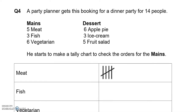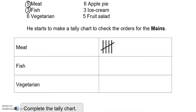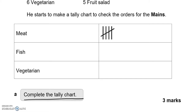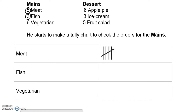A party planner gets a booking for a dinner party for 14 people. We've got mains and desserts. He starts to make a tally chart to check the orders for the mains: meat — 5, fish — 3, and we need to complete the tally chart. Fish is 3, so one, two, three. Vegetarian is 6, so one, two, three, four, five, six.